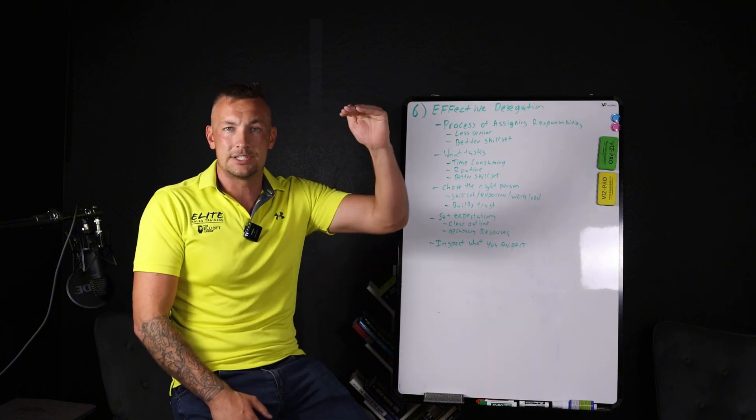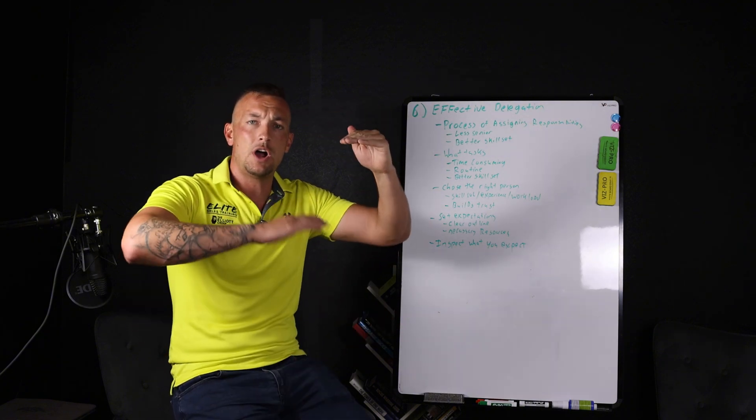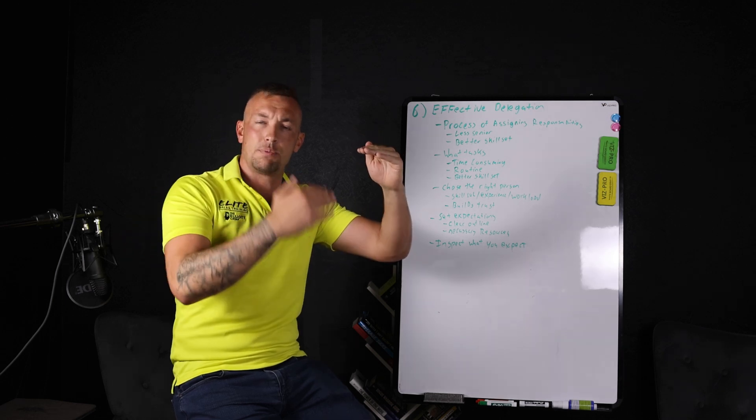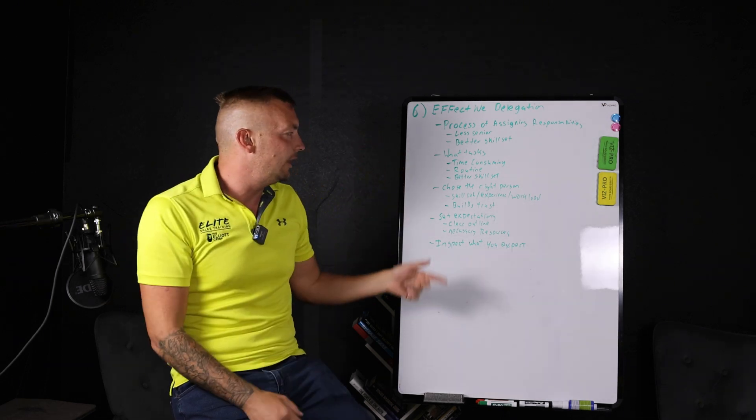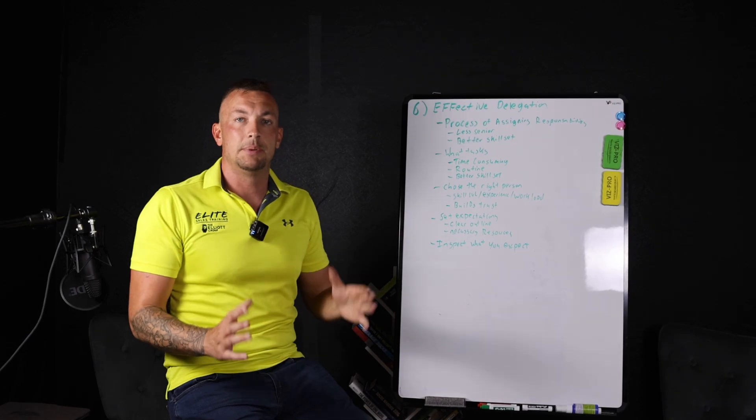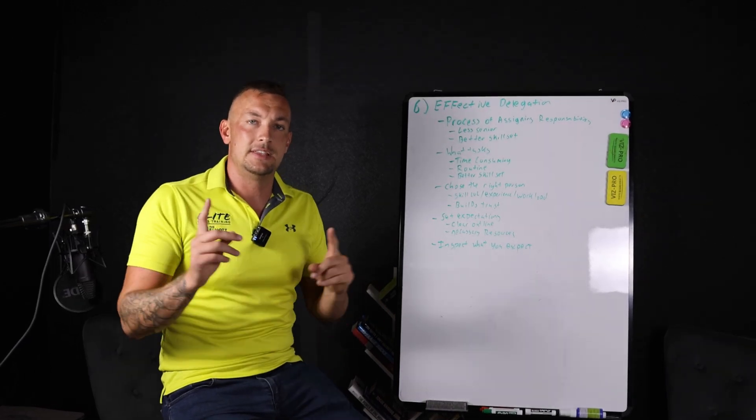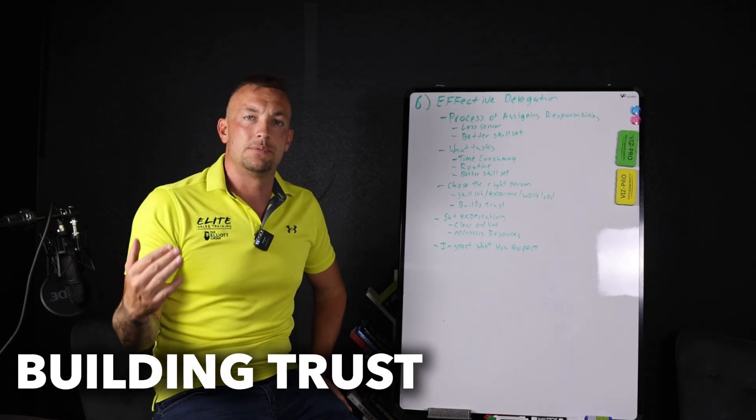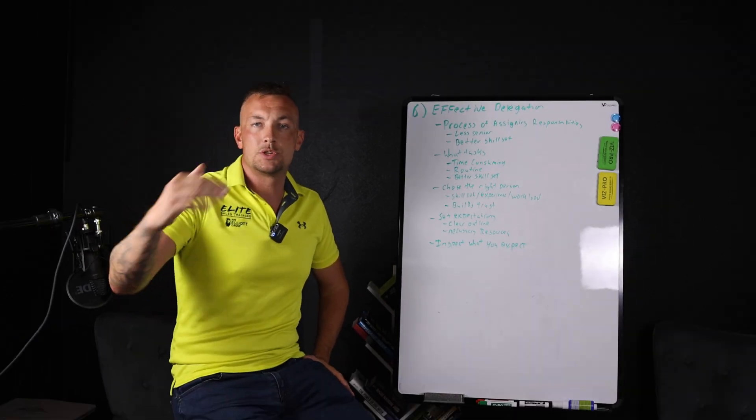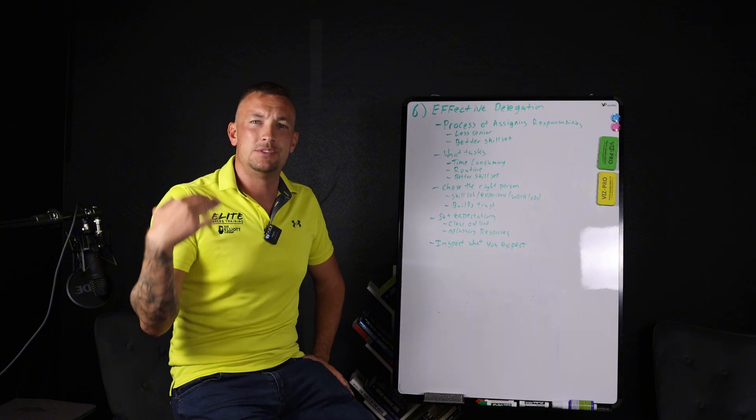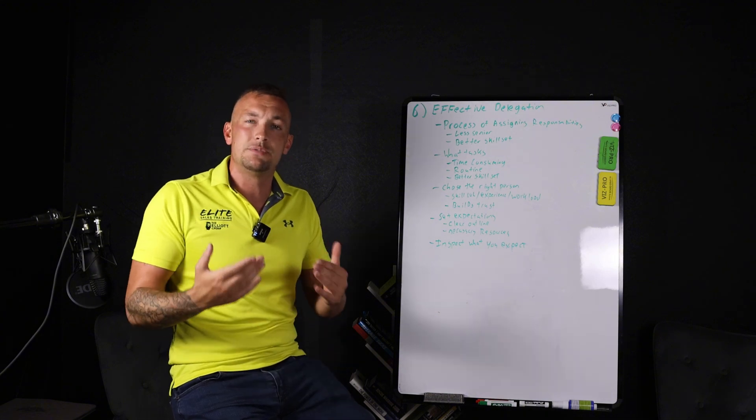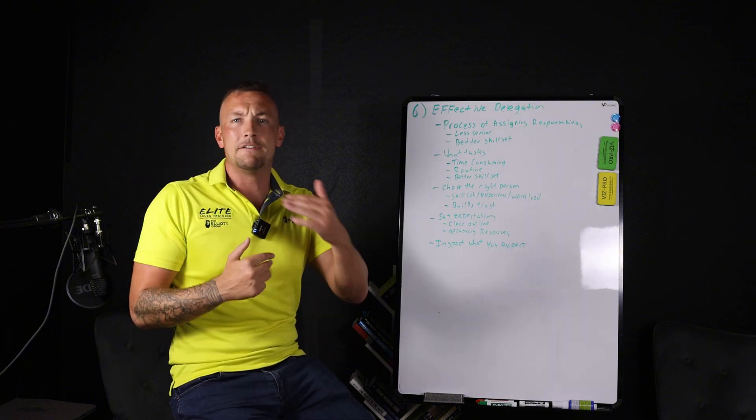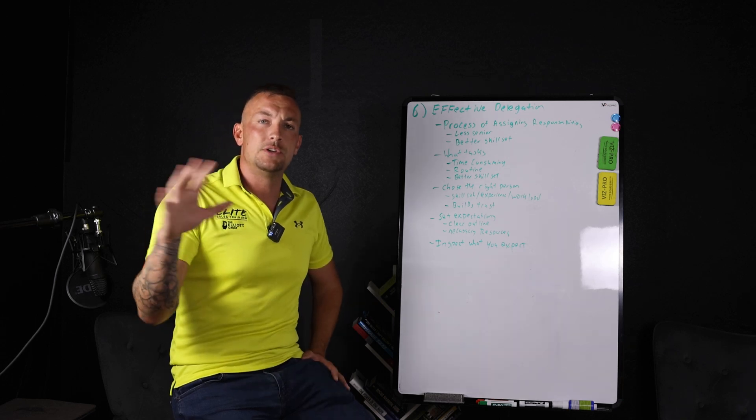You also want to look at their skillset and experience. Don't take the brand new person and give them a level 10 task when they're operating on a two. You're going to want to give them a three and a four and let them grow into it, because it's going to build trust in a relationship. Anytime you delegate a task, this is how you grow people through delegating tasks.